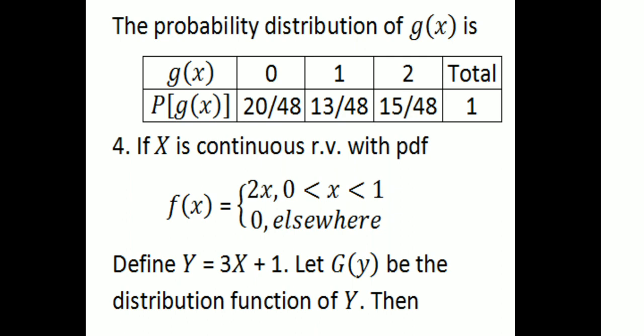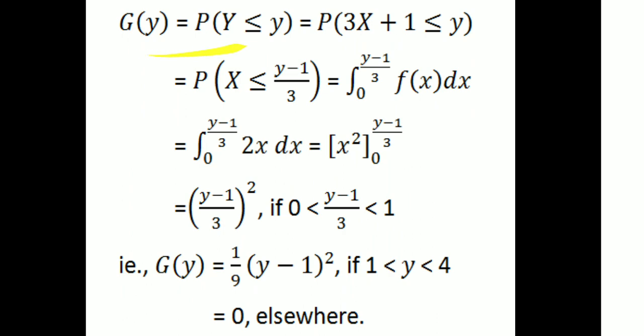Next example: if X is a continuous random variable with PDF f(x) = 2x for 0 < x < 1 and 0 elsewhere, define Y = 3X + 1. Let G(y) be the distribution function of Y. Then G(y) = P(Y ≤ y) = P(3X+1 ≤ y) = P(X ≤ (y−1)/3) = integral from 0 to (y−1)/3 of 2x dx = x² evaluated from 0 to (y−1)/3.